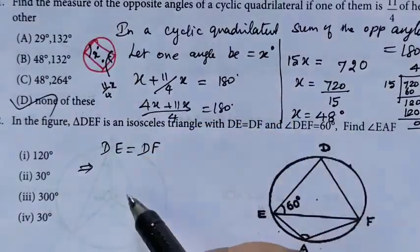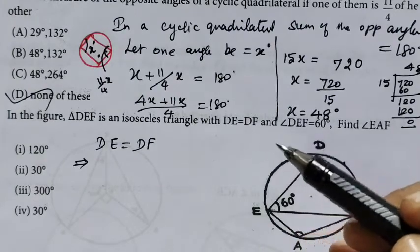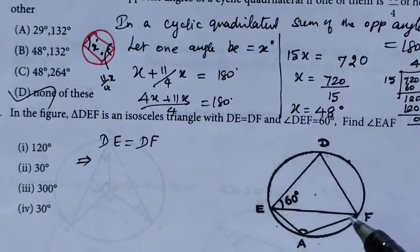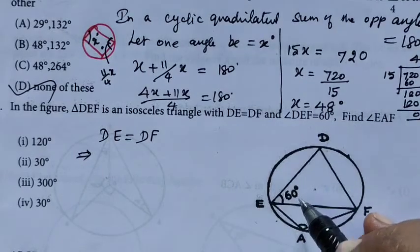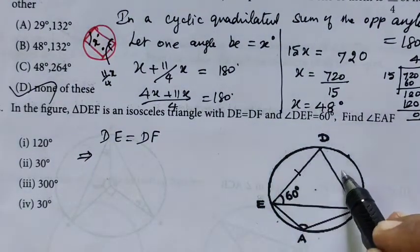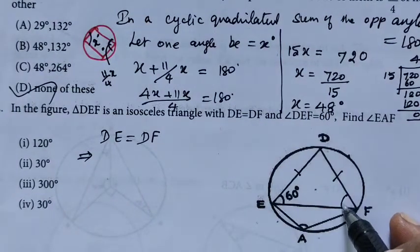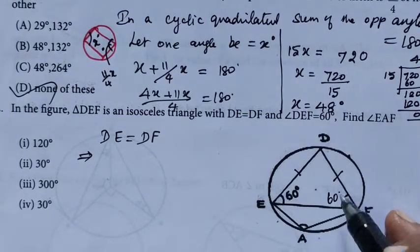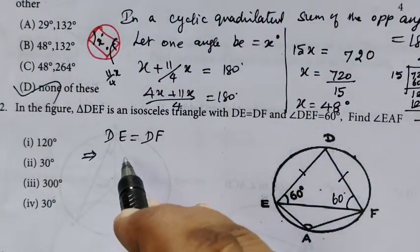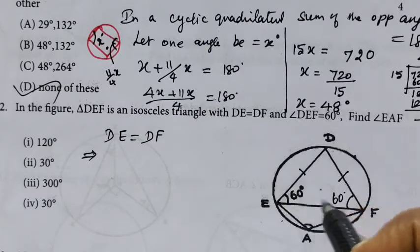In the figure, DEF is an isosceles triangle. We know that in an isosceles triangle, if the sides are equal then the opposite angles are equal. We are given DE equal to DF. So what is the opposite angle?